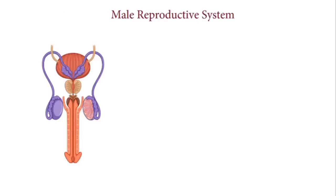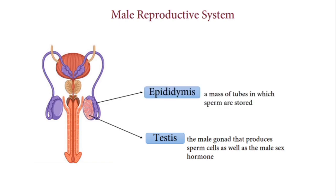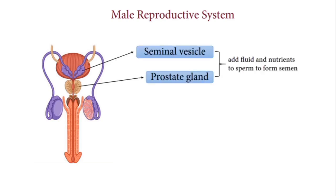Now let us take a look at the parts of the male reproductive system and their functions. The testes is the male gonad that produces sperm cells as well as the male sex hormone. The epididymis is a mass of tubes in which sperm are stored. The sperm duct is a muscular tube that links the testes to the urethra to allow the passage of semen containing sperm.